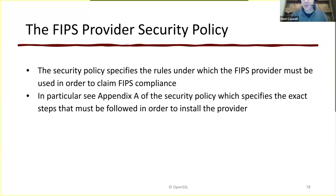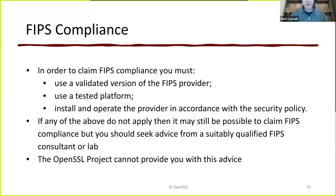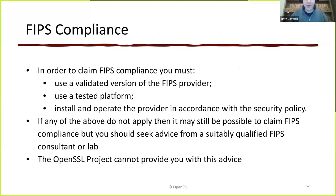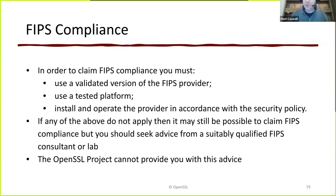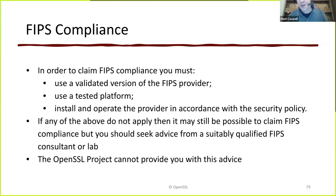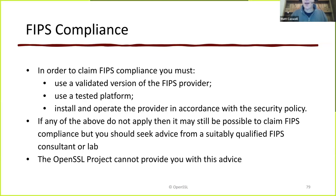I'll draw your attention in particular to Appendix A, which talks about the steps required to install the provider. In order to claim FIPS compliance, you have to have three things: a validated version of the FIPS provider on one of the tested platforms, and the provider has to have been installed and operated in accordance with the security policy. It may still be possible to claim FIPS compliance even if those don't all apply, but you need to go and talk to a FIPS consultant or a FIPS lab to get advice. The project can't provide you with that advice — we're not FIPS experts.